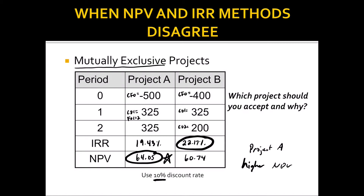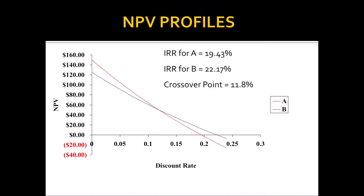You could also solve for the crossover point between two mutually exclusive projects. Below the crossover discount rate, Project A has a higher NPV; above it, Project B has the higher NPV. By solving for that crossover point and comparing it to the actual discount rate, you can identify which mutually exclusive project has the higher net present value and should be accepted as it would increase company value the most.